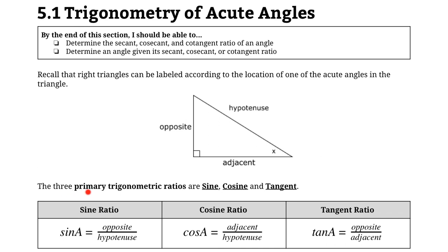We have three primary trig ratios that allow us to find a missing angle or side in the right angle triangle. The sine of an angle is equal to the opposite side over the hypotenuse. The cosine of that angle is equal to the adjacent side over the hypotenuse. And the tangent of that angle is equal to the opposite over the adjacent side.